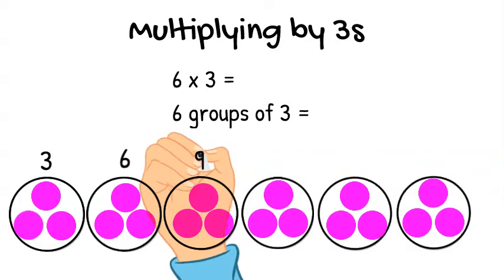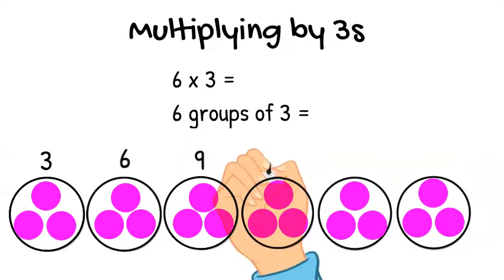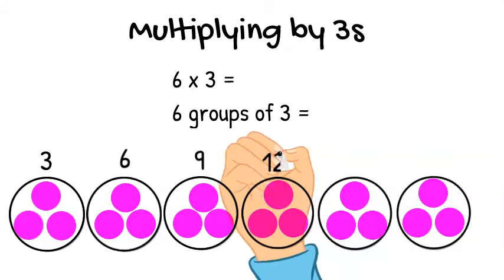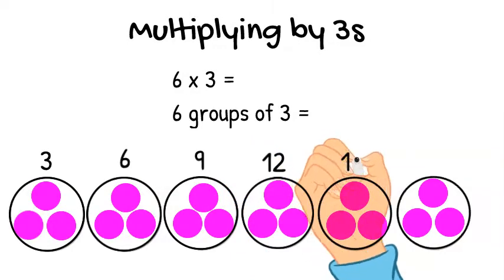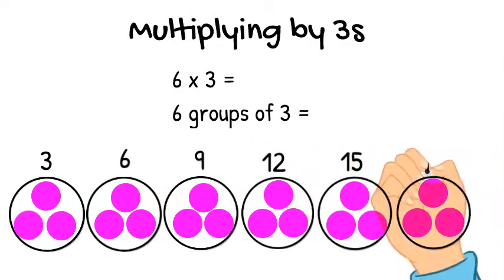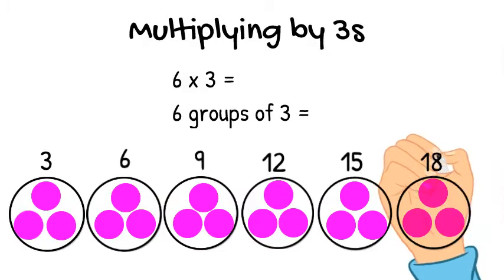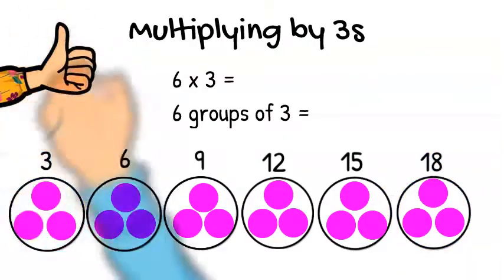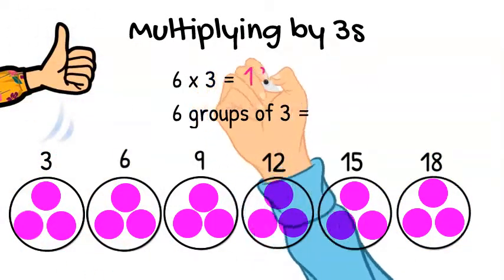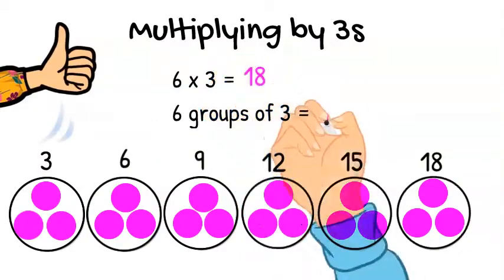Another three makes nine, plus another three makes twelve, plus another three makes fifteen, plus another three makes eighteen. Nice job! Six times three equals eighteen, or six groups of three equals eighteen.